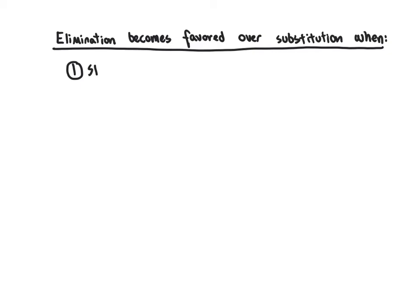If we use a stronger base — particularly a really strong, really unstable base — stronger bases are going to tend to prefer elimination reactions over substitution. That's not to say you can't use a relatively strong base in a substitution reaction, but the stronger the base, generally we're going to have a stronger preference toward elimination. There is always a competition between elimination and substitution; we're not making absolute statements, but rather saying what we can do to steer the reaction toward elimination.